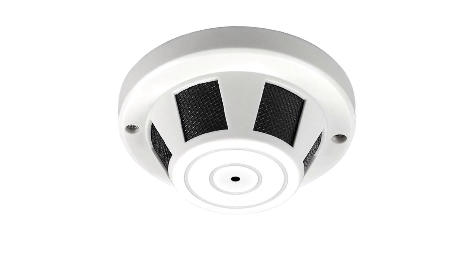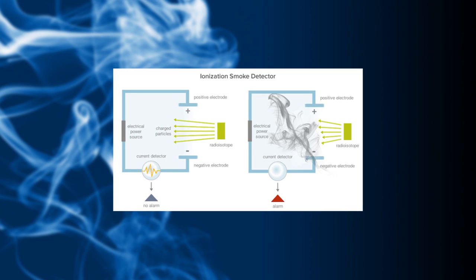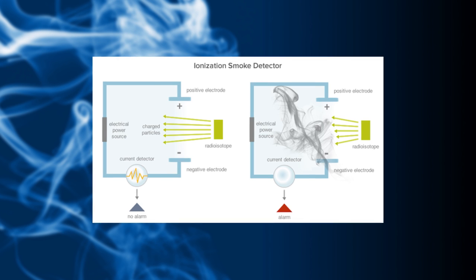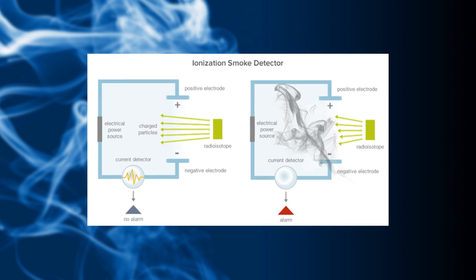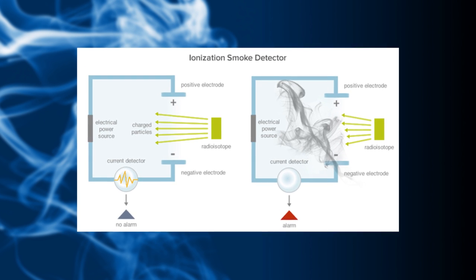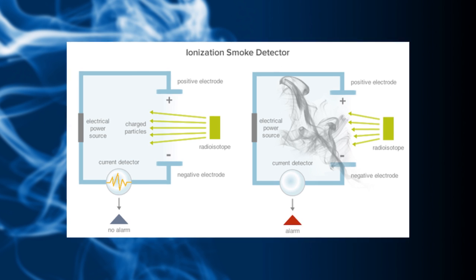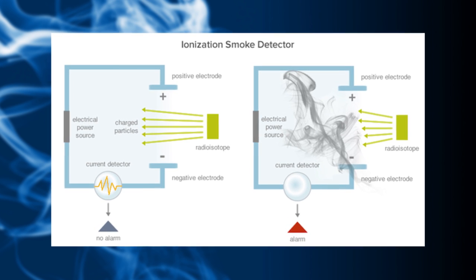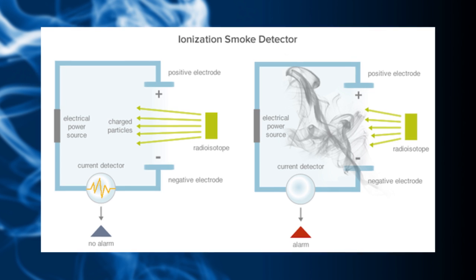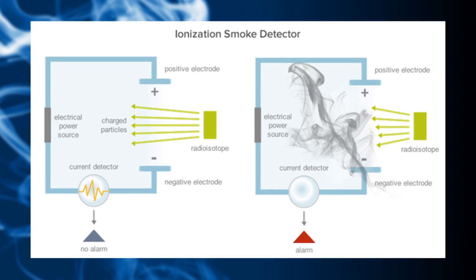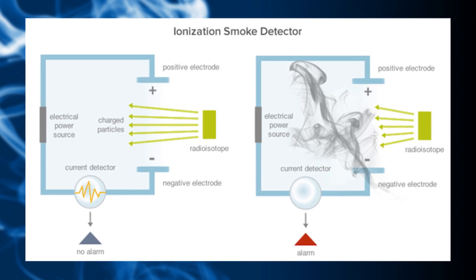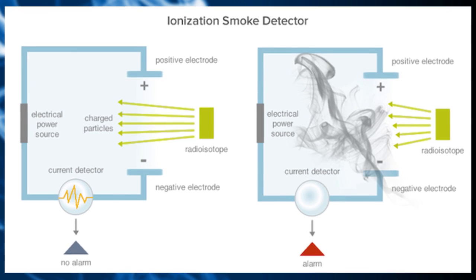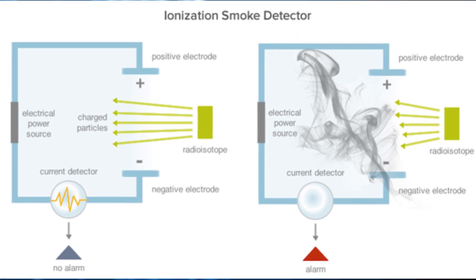This system creates a small electric current. When smoke enters the chamber, the particles attach themselves to the charged ions and restore them back to a neutral electrical state. This disrupts the electric current and an alarm is triggered. Hot air can also change the rate at which ionization occurs within the chamber, and this will also trigger the alarm. Ionization detectors are much more common than photoelectric detectors because they are less expensive and better at detecting smaller amounts of smoke that come from fast flaming fires.